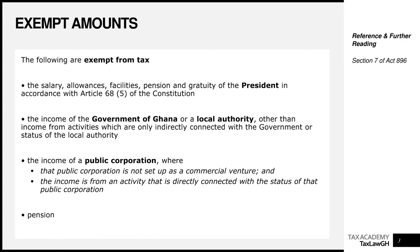For a public corporation to enjoy the exemption, number one, they shouldn't be set up as a commercial venture, and number two, the activity should be directly connected with their status — what were they set up by law to do? If that is what they are doing, then they enjoy the exemption. The next item is pension.